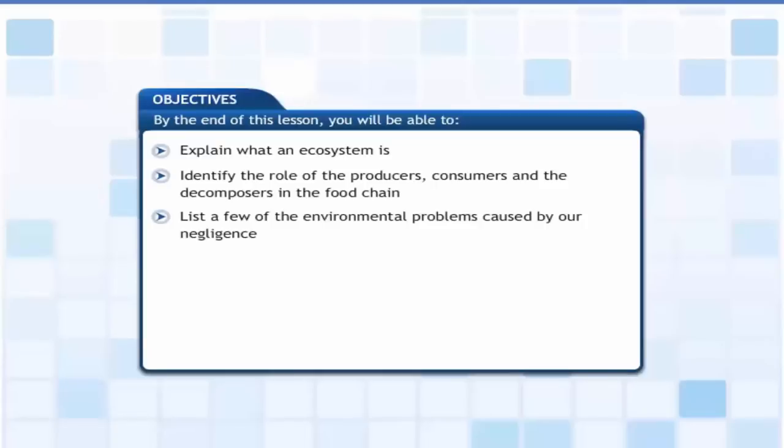By the end of this lesson you will be able to explain what an ecosystem is, identify the role of the producers, consumers, and the decomposers in the food chain, and list a few of the environmental problems caused by our negligence.